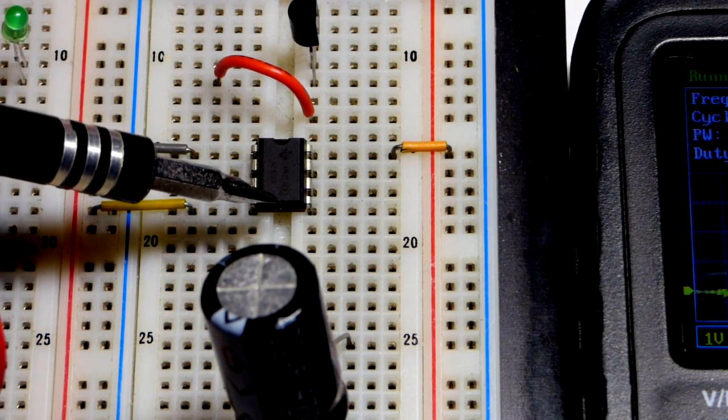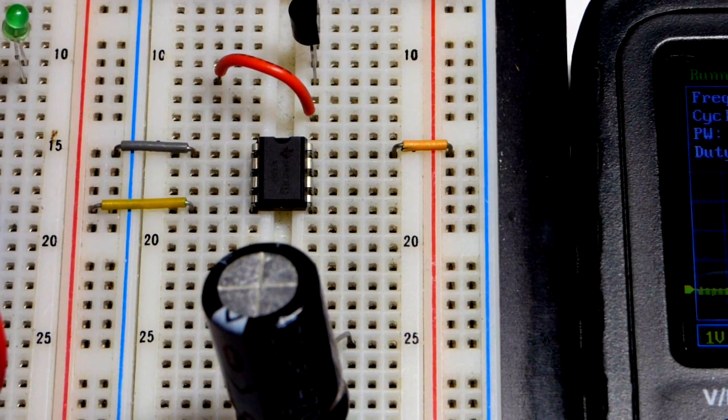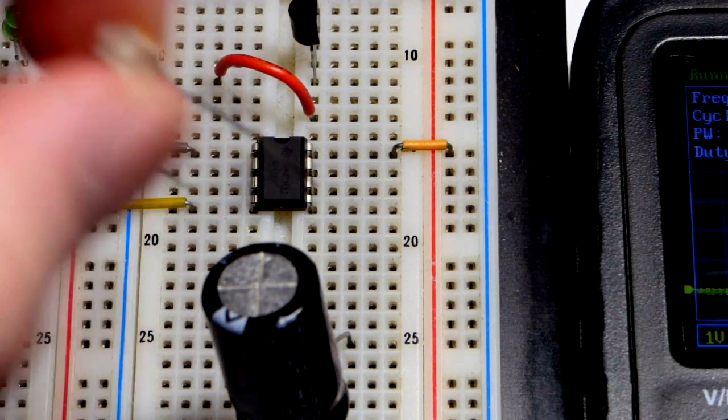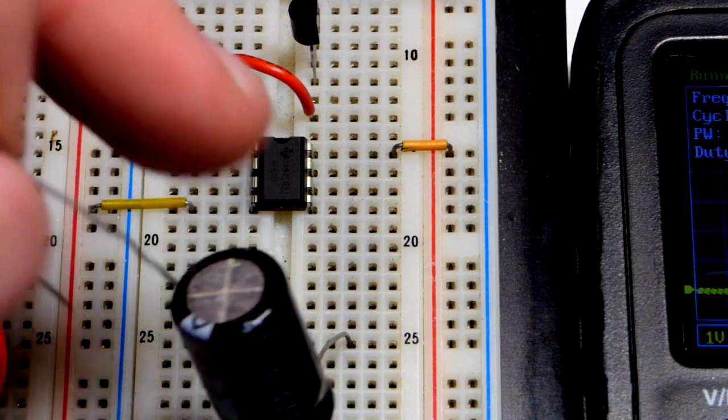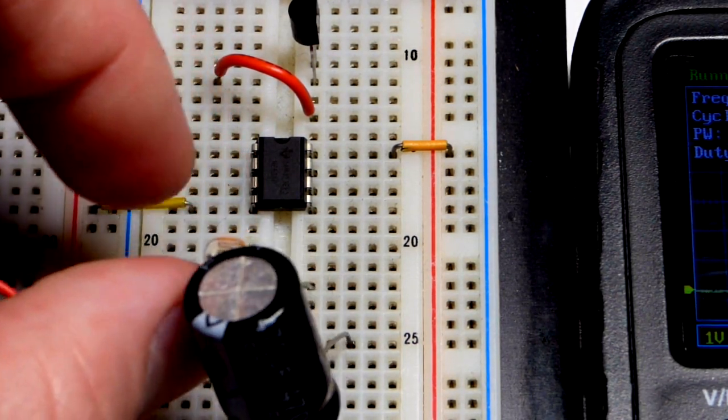This is the NE555 timer. I'm waiting for the LMC555 timer to come in the mail. We're going to use a light-dependent resistor and a capacitor. That's really all that's going to be used for the timing.